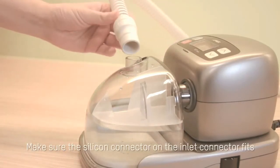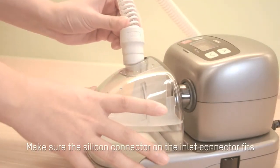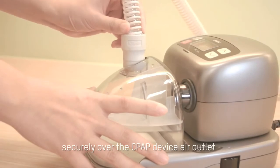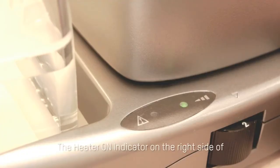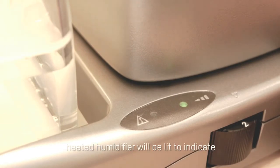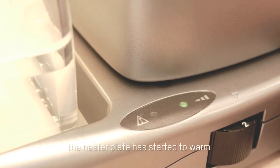Make sure the silicone connector on the inlet connector fits securely over the CPAP device air outlet. The heater on indicator on the right side of heated humidifier will be lit to indicate the heater plate has started to warm.